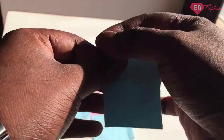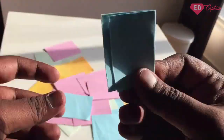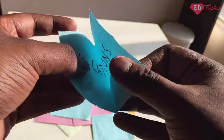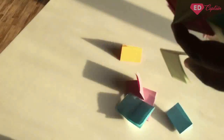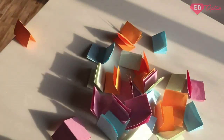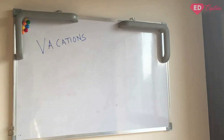Now when you are done writing your themes, fold the sheets. Jumble them up and ask the players to choose a sheet of paper for 10 sets. Once a player has chosen a sheet of paper, ask the player to announce the theme to everyone.